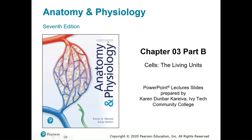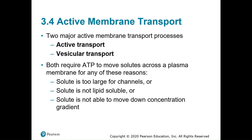Moving into part two of chapter three. We left off covering passive transport — now we'll focus on active transport. We have two types of active membrane transport processes: active transport and vesicular transport. The main concept of active transport is that we need ATP, which is what the cell uses for energy. We use active transport when the solute is too large for channels, not lipid-soluble, or not able to move down the concentration gradient.